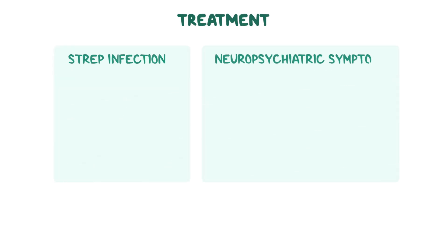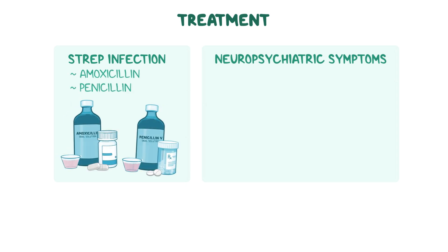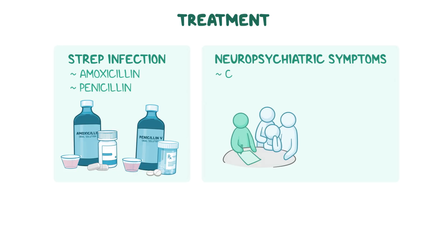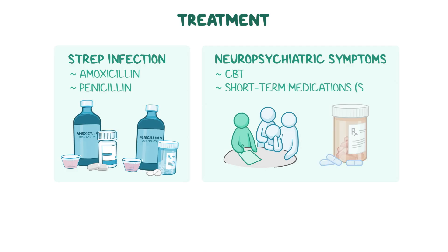Treatment for PANDAS focuses on treating the strep infection and managing neuropsychiatric symptoms. Antibiotics like amoxicillin or penicillin are the first step to clearing the infection, and they may also be used to prevent flare-ups. Behavioral symptoms, tics, and anxiety are often treated with cognitive behavioral therapy, or CBT, and in some cases short-term medications like selective serotonin reuptake inhibitors, or SSRIs.